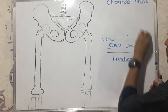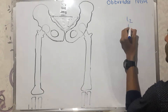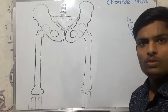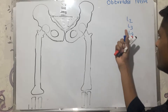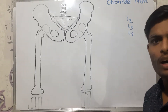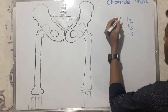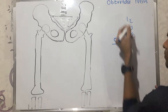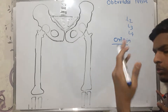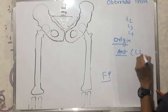The root value of the obturator nerve is L2, L3, and L4 — the same root value as the femoral nerve. The difference is that the femoral nerve arises from the posterior divisions of L2, L3, and L4 spinal nerves, whereas the obturator nerve arises from the anterior divisions of L2, L3, and L4. You can remember: F and P — femoral nerve uses posterior divisions; obturator nerve uses anterior divisions — same root values, different divisions.